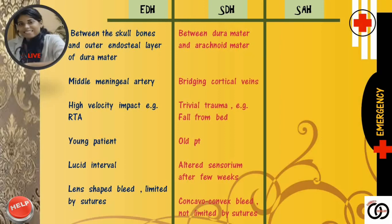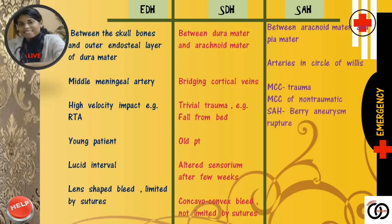The third variety is subarachnoid hemorrhage. Here bleeding occurs between the arachnoid mater and pia mater and the source of bleeding is arteries involved in the formation of the circle of Willis. Most common cause of SAH is trauma, but most common cause of non-traumatic SAH is rupture of cerebral berry aneurysm. The patient presents with severe headache — the worst headache of his life — neck rigidity, vomiting, altered sensorium due to meningeal irritation. On NCCT brain, the hemorrhage is seen as linear hyperdensity, i.e. the sulci are seen filled with blood.